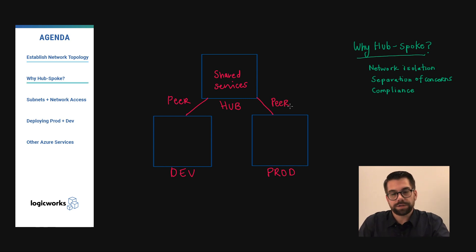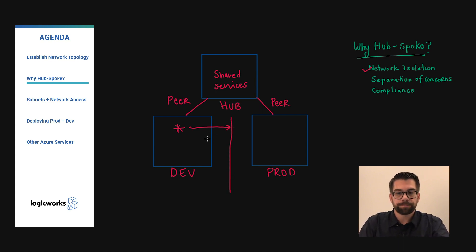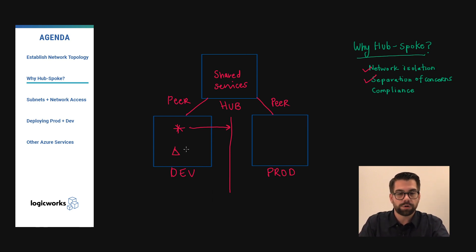One of the main benefits to the hub and spoke model is network isolation. Network isolation allows us to establish isolation between SDLC tiers. In this scenario, the resources in the development environment cannot communicate to the production environment, which prevents unintended changes and issues. Another benefit is the separation of concerns, which allows us to make changes in the lower level environment first to ensure we are not impacting users accessing our production environment.